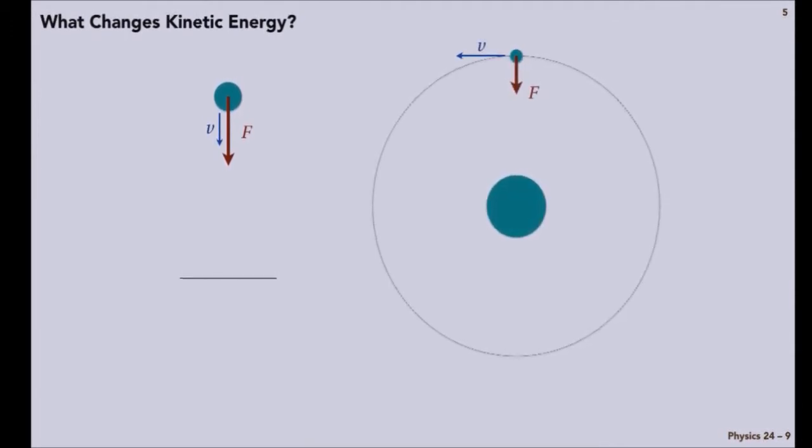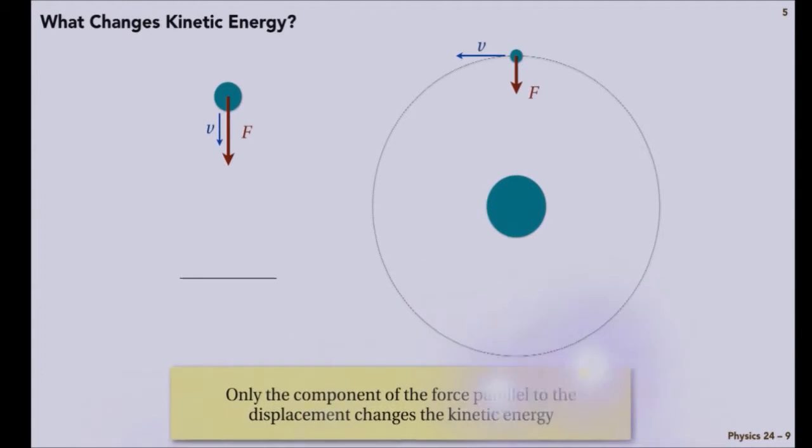If I consider the same particle, and now it's orbiting, so that the velocity and the force are not parallel to one another, then what do we expect to happen for this particle as it goes around? It's just going to go around at constant speed. So no change in the kinetic energy for a circular orbit.